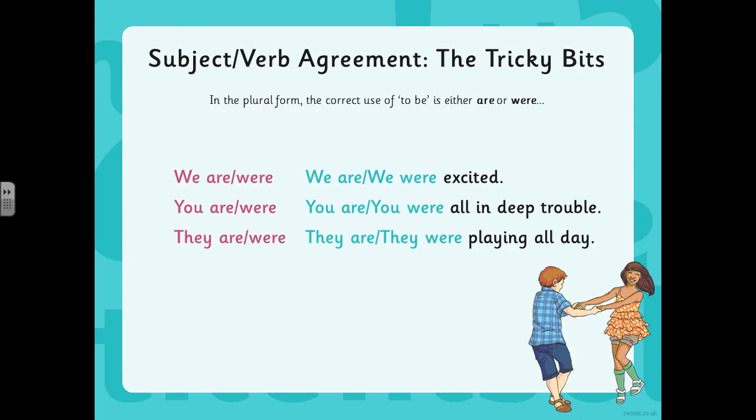When we look at the plural form of using the verb 'to be', to make sure that our subject and verbs agree, we must use either are or were. So you wouldn't say 'we is excited' — you would say 'we are excited'. You wouldn't say 'you was all in deep trouble' — you would have to write 'you were all in deep trouble'. And you wouldn't say 'they is playing all day' — to be grammatically correct, you would need to say 'they are playing all day', or if you're in the past tense, 'they were playing all day'.